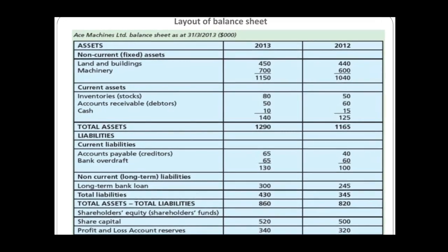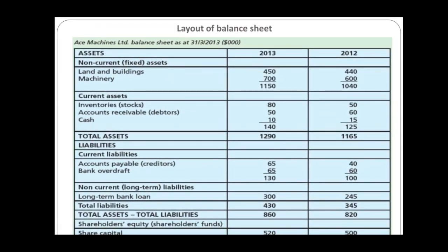On the asset side, we have non-current assets — assets owned by the business for a long period of time, such as land, buildings, machinery, equipment, and vehicles. These are not for sale; they are used by the business over the long term. The other type are current assets — assets that are easily converted into cash within a short period of time, typically within a year. Examples include inventories, accounts receivable, and cash.